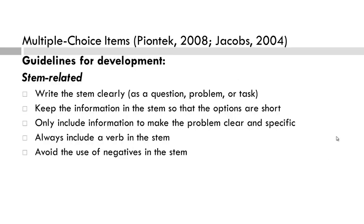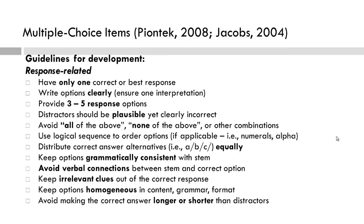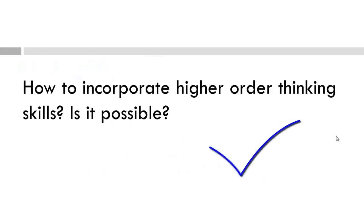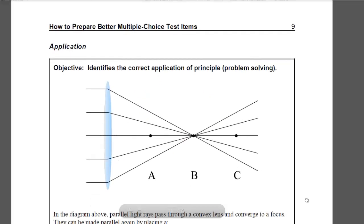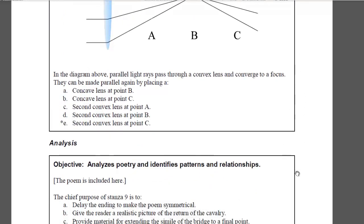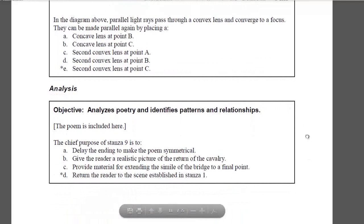Piontek and Jacobs provide the following guidelines for creating stems. Please pause to read so that you can apply this to an example. Please pause to consider the following guidelines for writing responses to the stem. While it is possible, it is challenging to create. If you are faced with a large number of students, you may not have a chance to provide opportunities for authentic types of assessment activities. However, it is possible to create multiple choice items that address skills other than remembering or understanding. These examples on page 9 demonstrate how higher order thinking skills might be addressed in a multiple choice question.